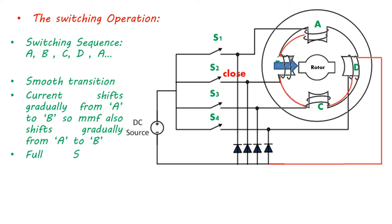Now the closing of switches three will excite the phase C and rotor moves another 90 degrees. This way, closing of switch sequentially will generate the rotational MMF and rotor rotates in anticlockwise direction.